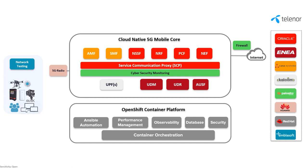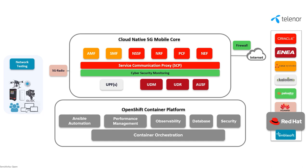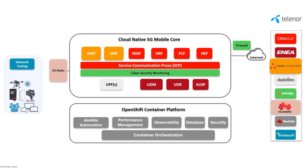We're here showing a truly multi-vendor ready-to-commercialize 5G stand-alone setup running on a vendor-neutral OpenShift Kubernetes container platform from Red Hat. We are leveraging the 5G RAN from Huawei, and we're leveraging the SMF and AMF from Casa Systems.